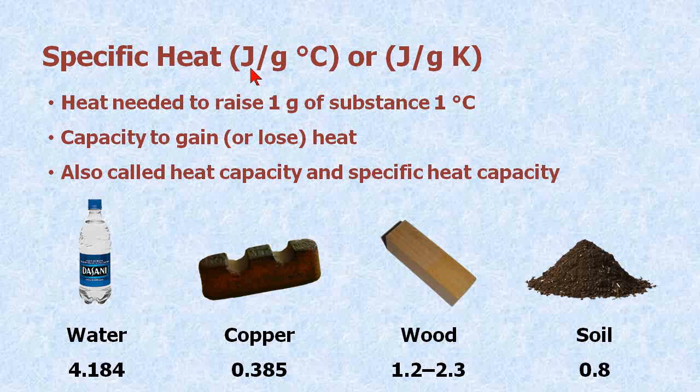It can be expressed as joules per gram degree C, as everything down here is, or joules per gram Kelvin. Water has a specific heat of 4.184 joules per gram degree C, copper is quite a bit less, you see wood is in between, and then soil is quite a bit less than water as well.